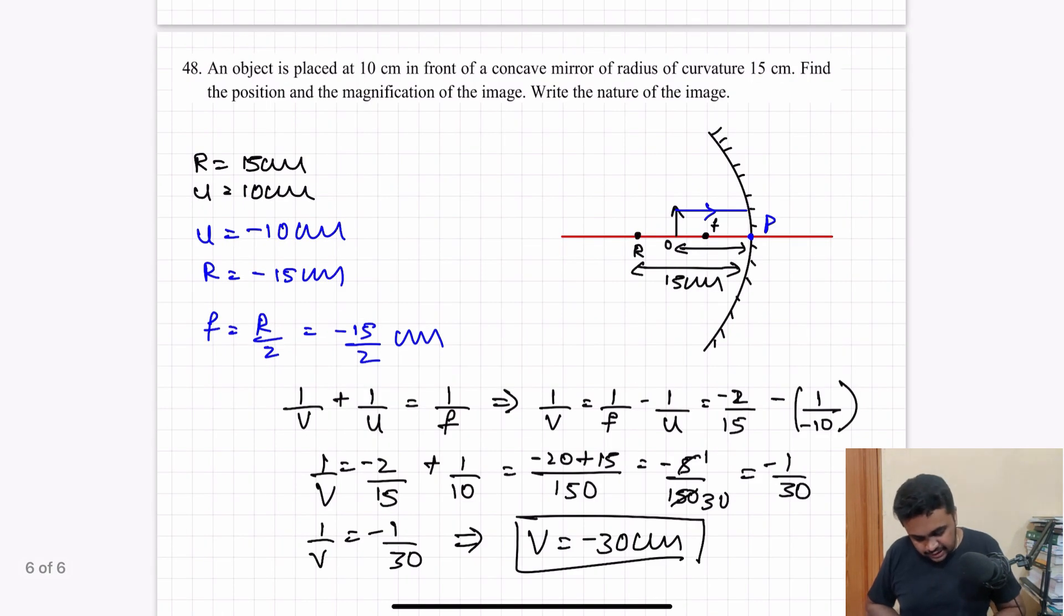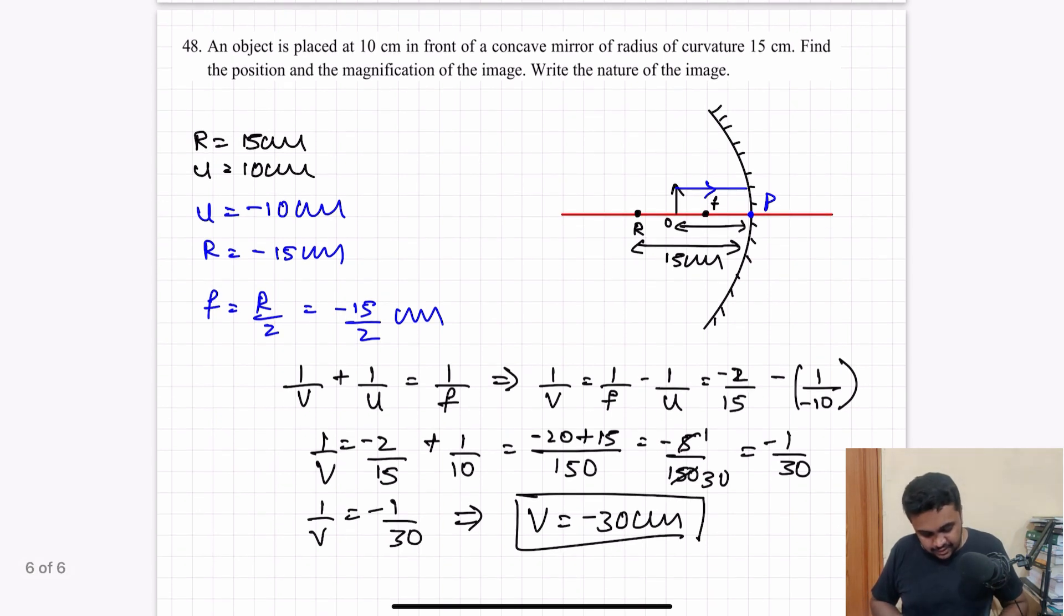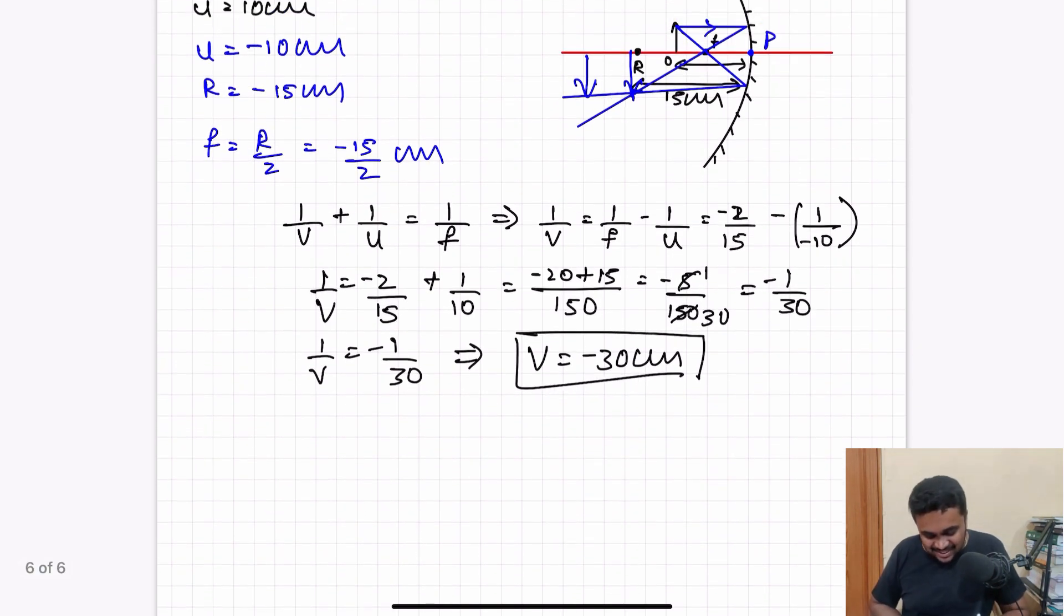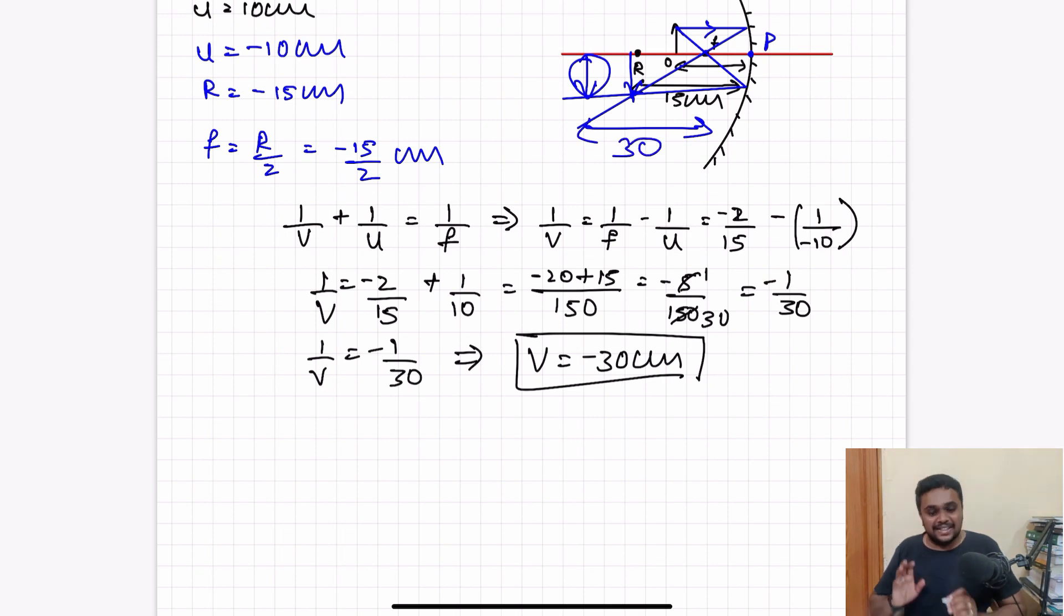The image is behind the radius of curvature. The negative sign indicates the measurement is in the opposite direction of light, so the image forms 30 centimeter away from the mirror. One ray from the object parallel to principal axis will pass through the focal length after reflection. Another ray passing through focal length will reflect parallel to the principal axis. The actual image forms 30 centimeters away from the mirror.